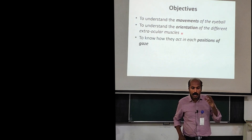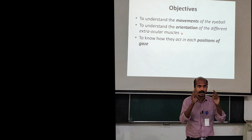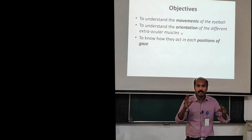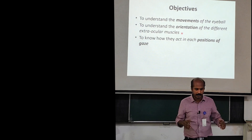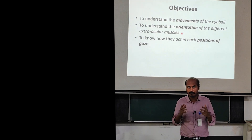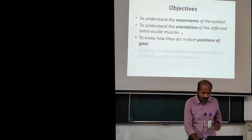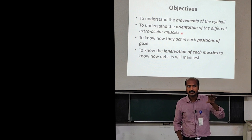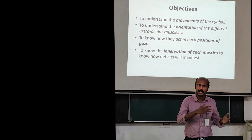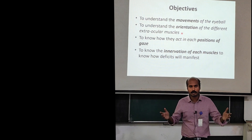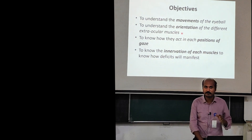We need to know how they act in each position of gaze — the eyes can gaze in different positions — so in different positions of gaze each of these muscles will act differently. These second and third points are very important to understand the mechanics of how the eyeball moves. We will conclude with the basic idea of how these muscles are innervated, so that a lesion of the nerve causing that innervation can result in a specific deficit of eyeball movement.